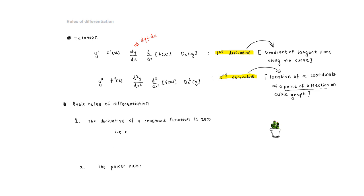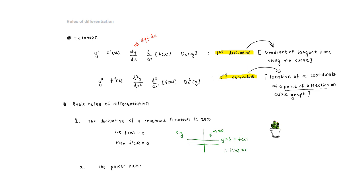The first rule is that the derivative of a constant function is zero. If f of x equals c, then f prime of x equals zero. This makes sense because a constant like f(x) = 3 represents a horizontal line, and the gradient of a horizontal line is zero everywhere, so f prime of x equals zero.